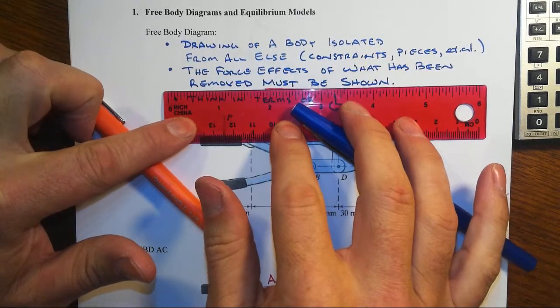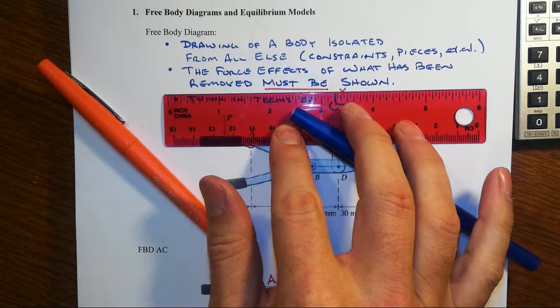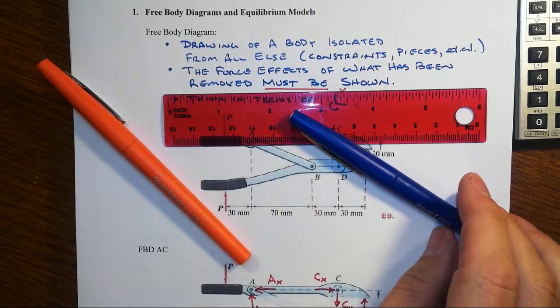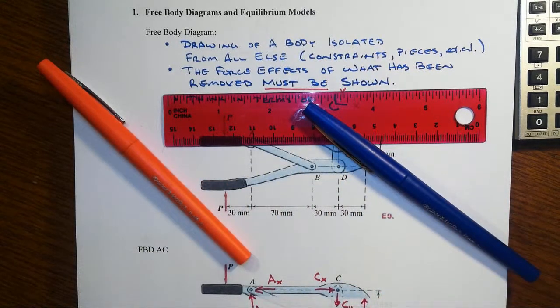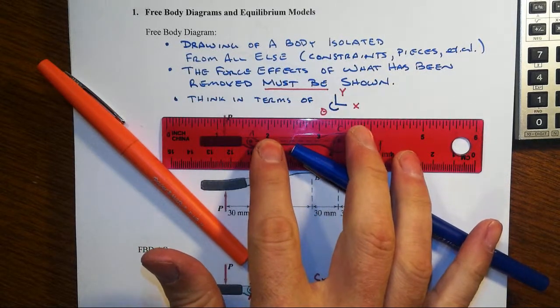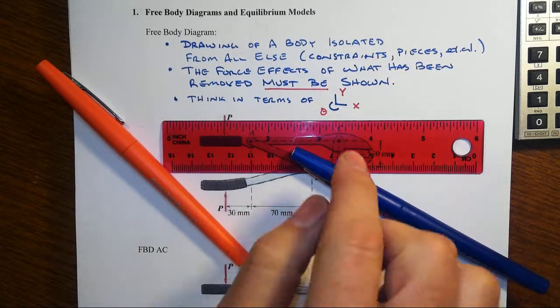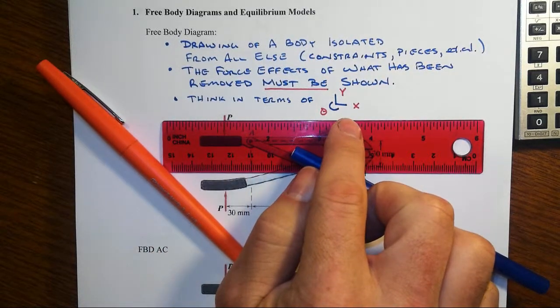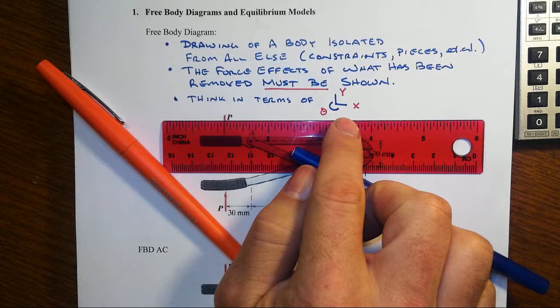That might be supports, what we might call constraints, or other pieces that we've pulled away. But that body now is like a satellite in space and we've pulled everything else off of it. However, when we've pulled it off, we must include the effects of the forces that have been removed. We want to think in terms of the Cartesian coordinate system.